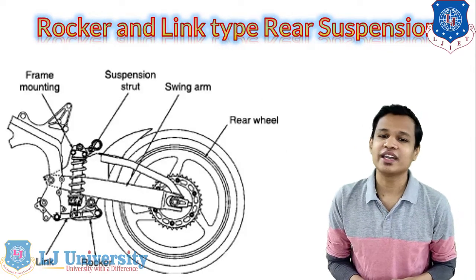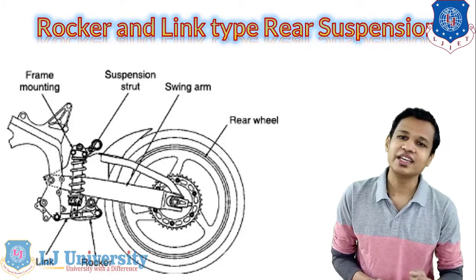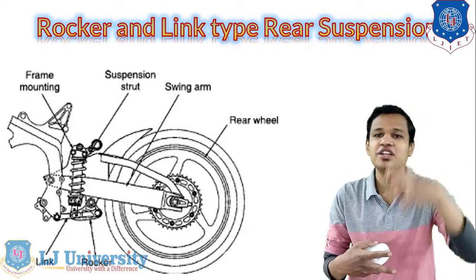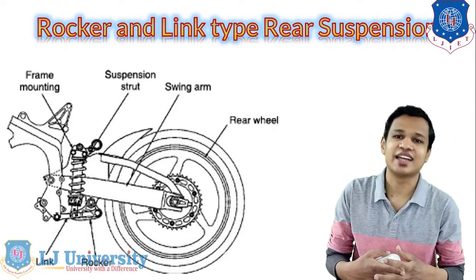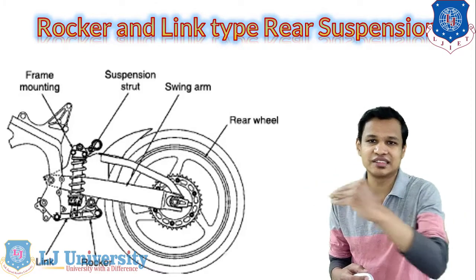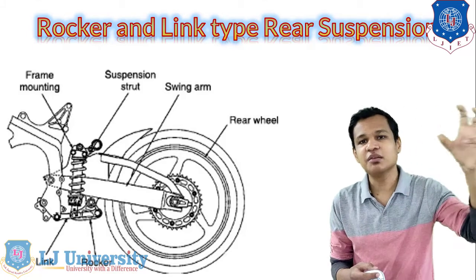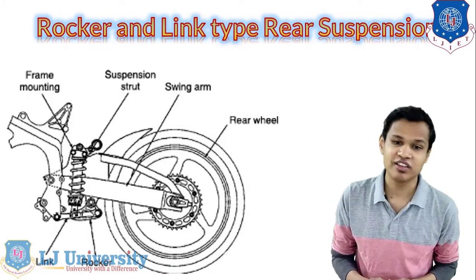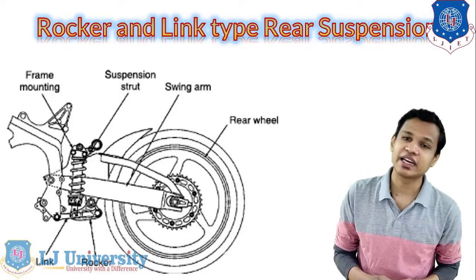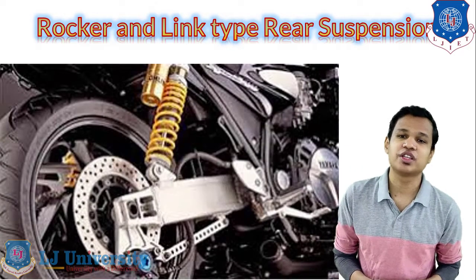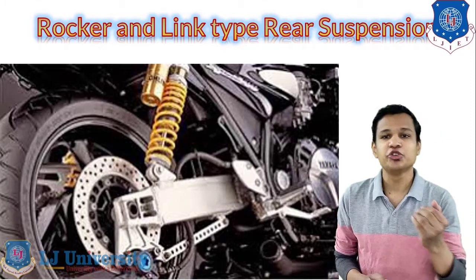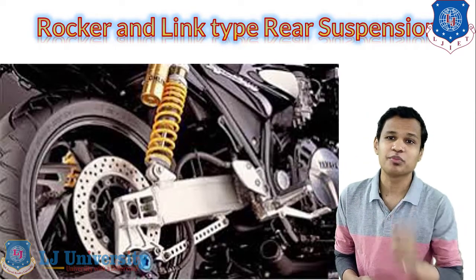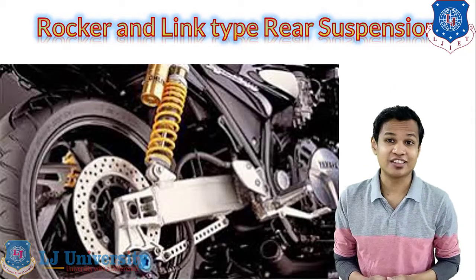The last type is the rocker and link type rear suspension system. One rocker and linker is first attached together, and at that attachment the spring and shock absorber assembly is connected. There is also a swing arm attached between those assemblies, connected with the rear wheel and the frame mounting. This provides better rigidity and better comfort to the driver due to the rocker and link arrangement. In the figure you can see that from the middle part the swing arm extends, and below, the rocker link is provided on which the suspension system is mounted.